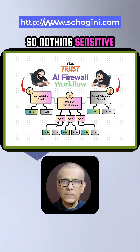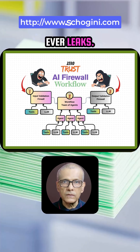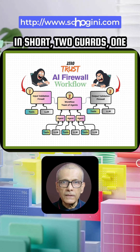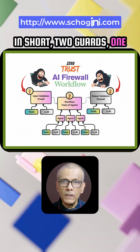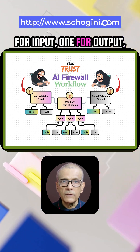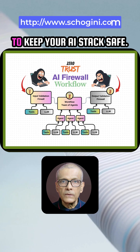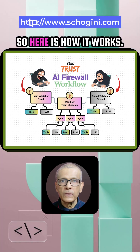So nothing sensitive ever leaks. In short, two guards: one for input, one for output, to keep your AI stack safe.